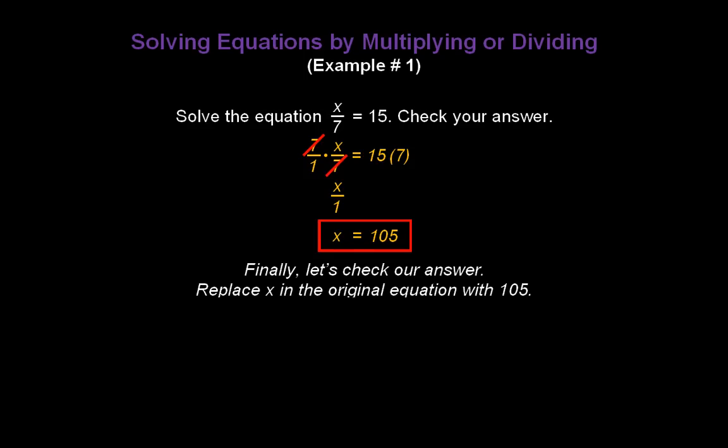Let's go ahead and check and see if that's right. Replace x in the original equation with 105. So I'll write 105 divided by 7. Does that give me 15? And when I do 105 divided by 7, I find out that, sure enough, I have 15 on both sides of the equation. So that answer is correct.